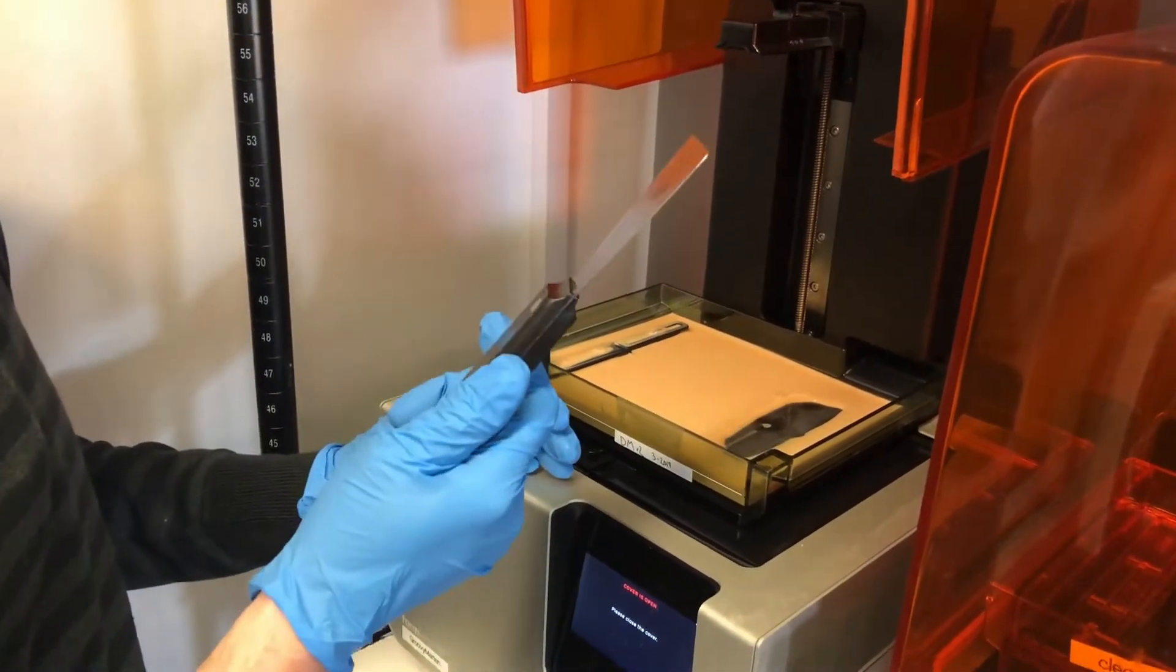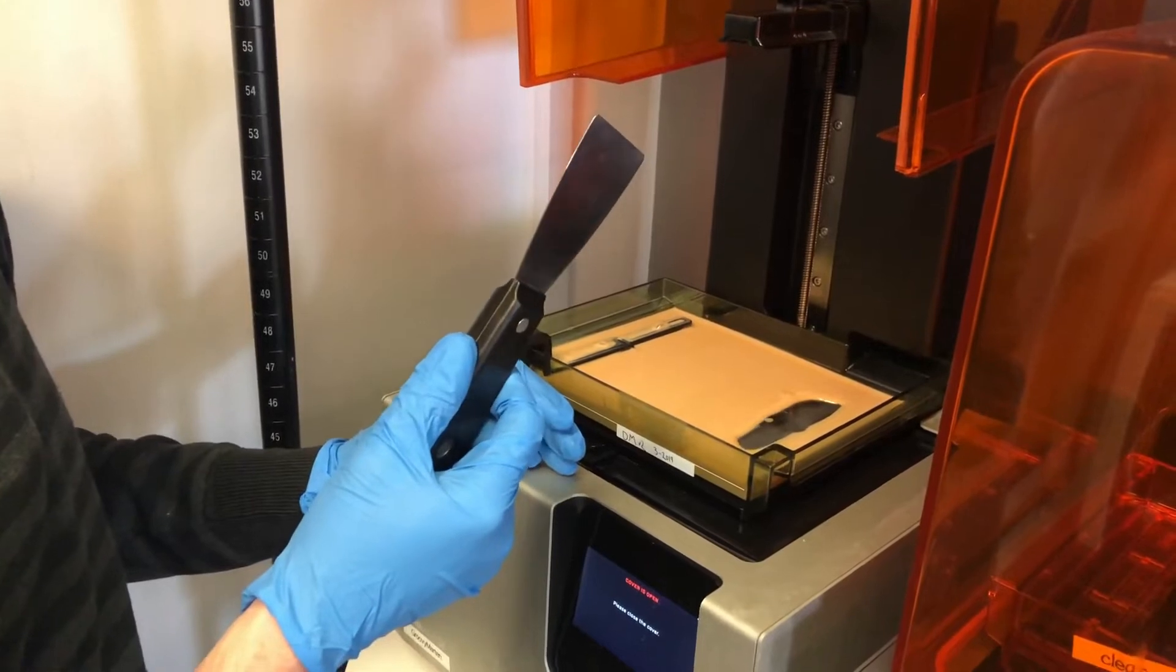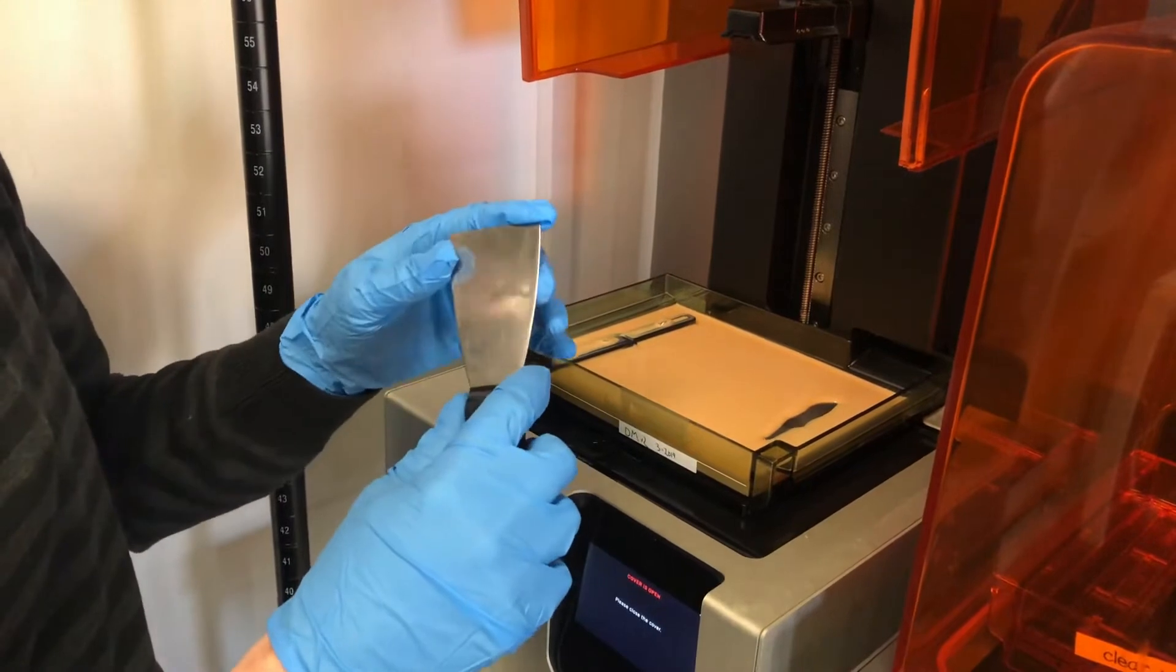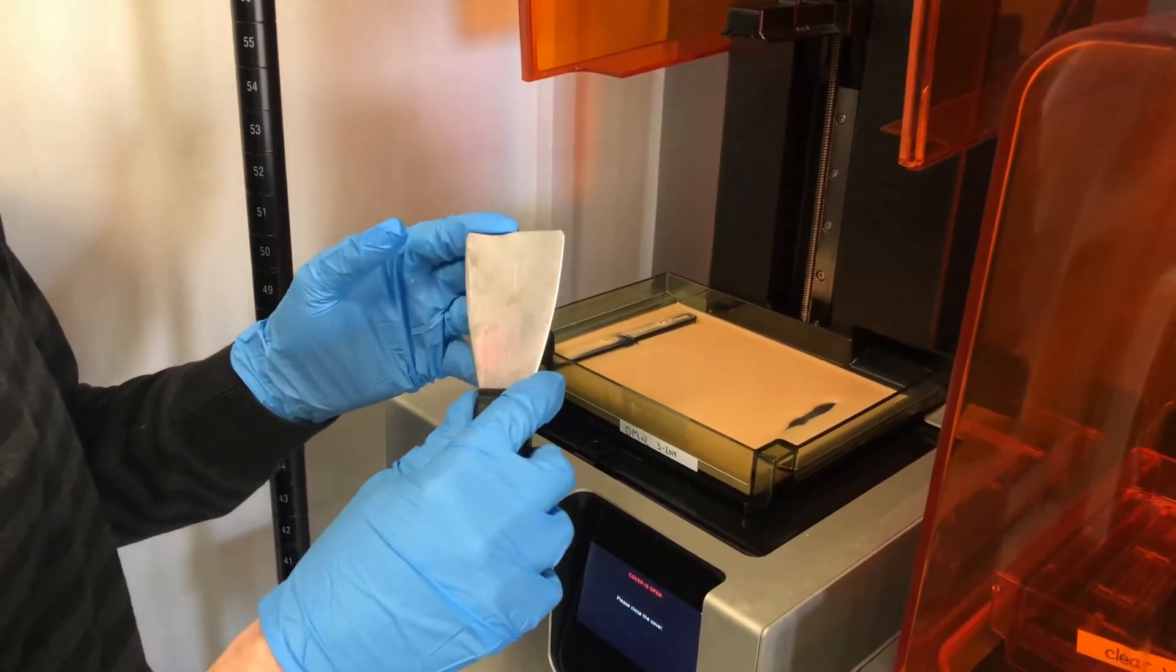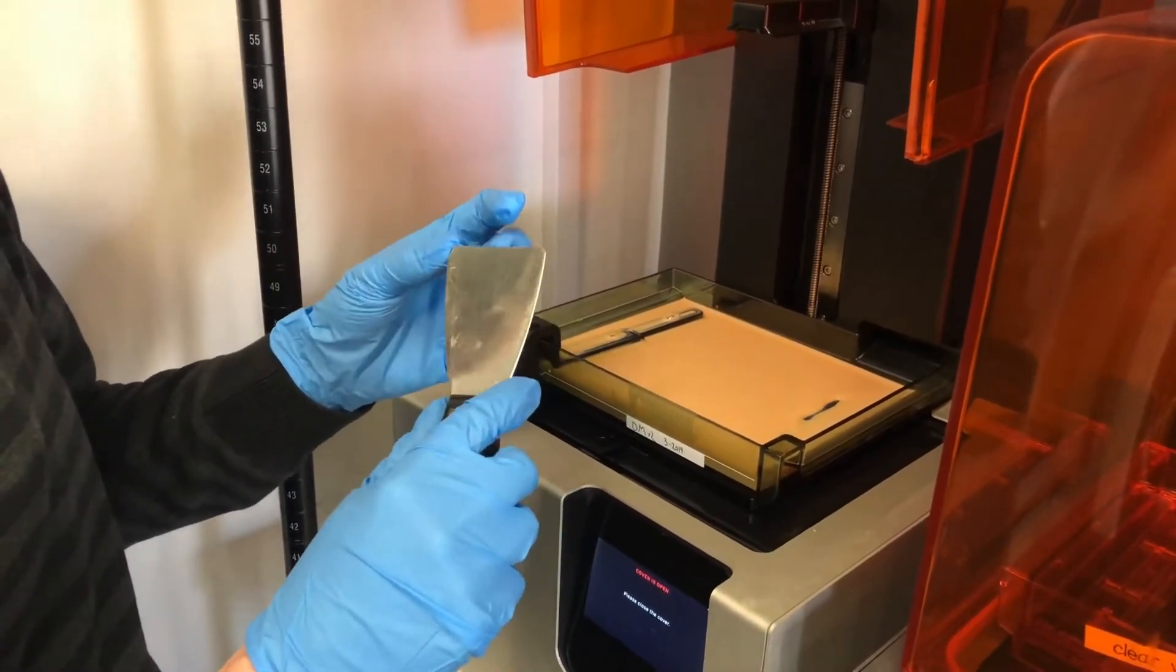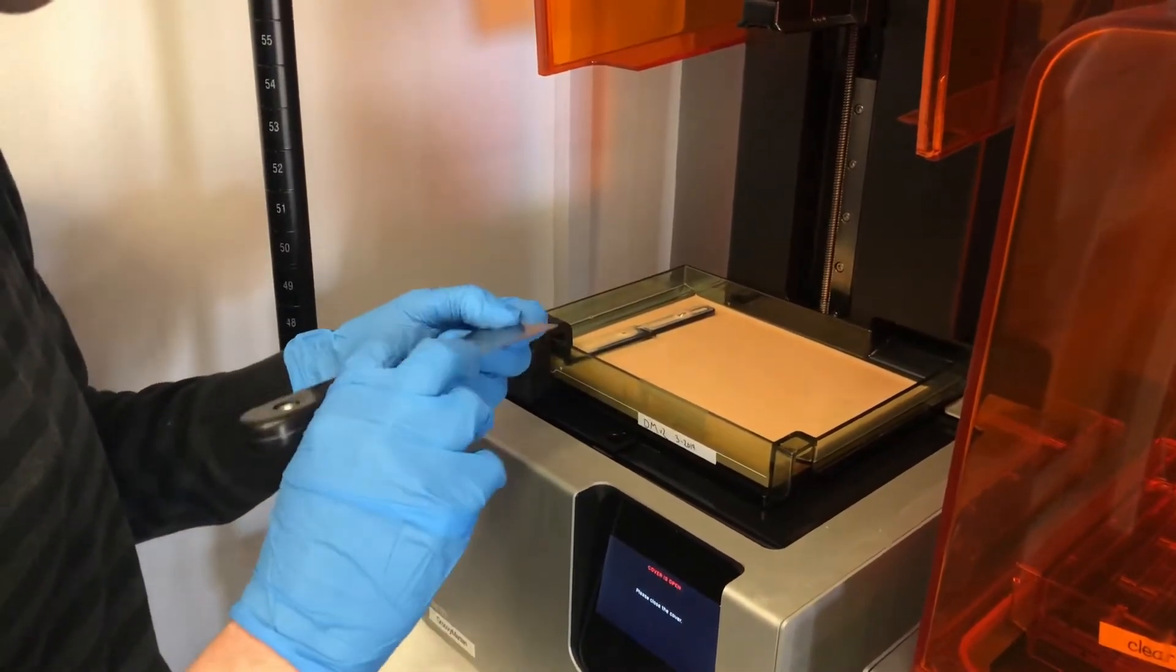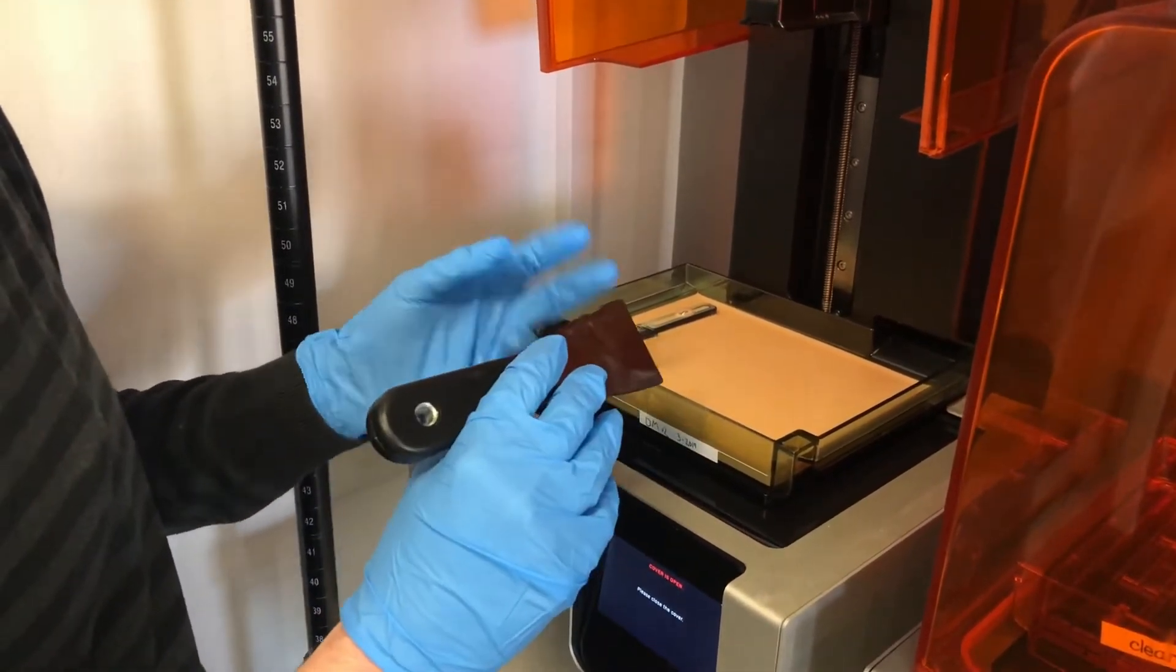Silicone is probably even better, but the important thing is it's never been used to scrape a build plate. It needs to have a perfectly smooth edge. You do not want to use anything with any burrs in it or nicks because you will hurt your resin tank doing this.